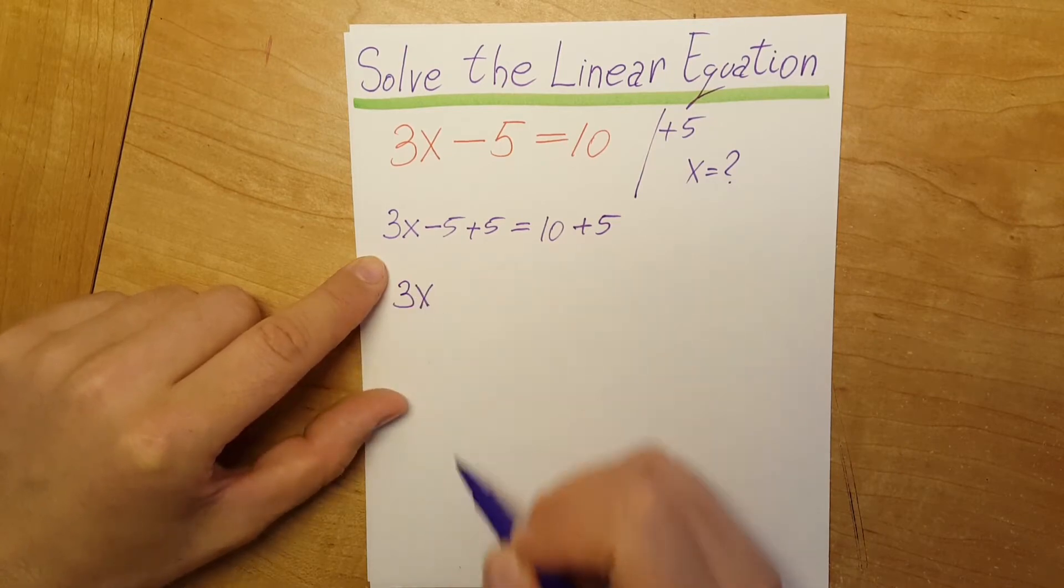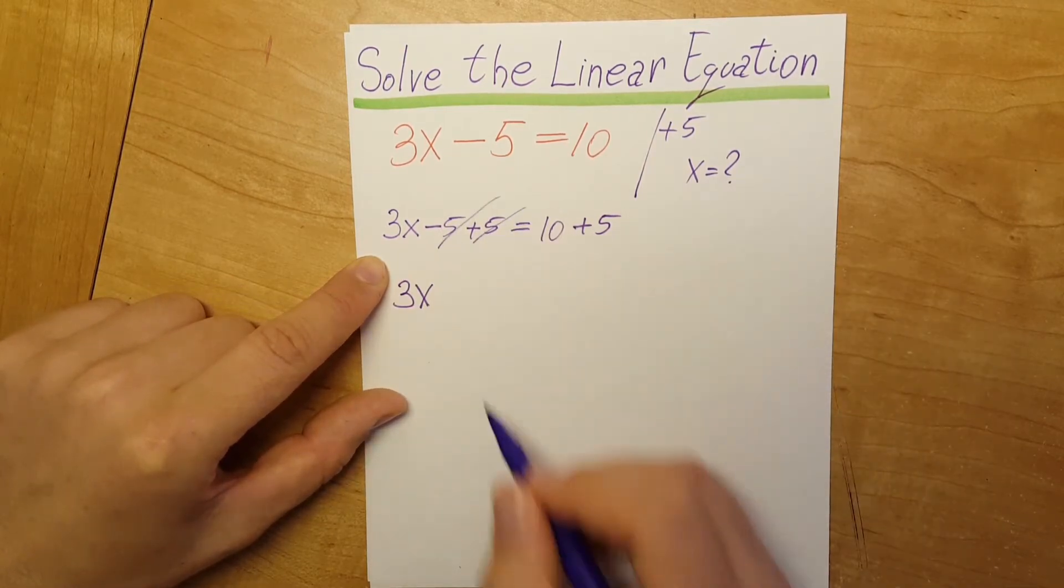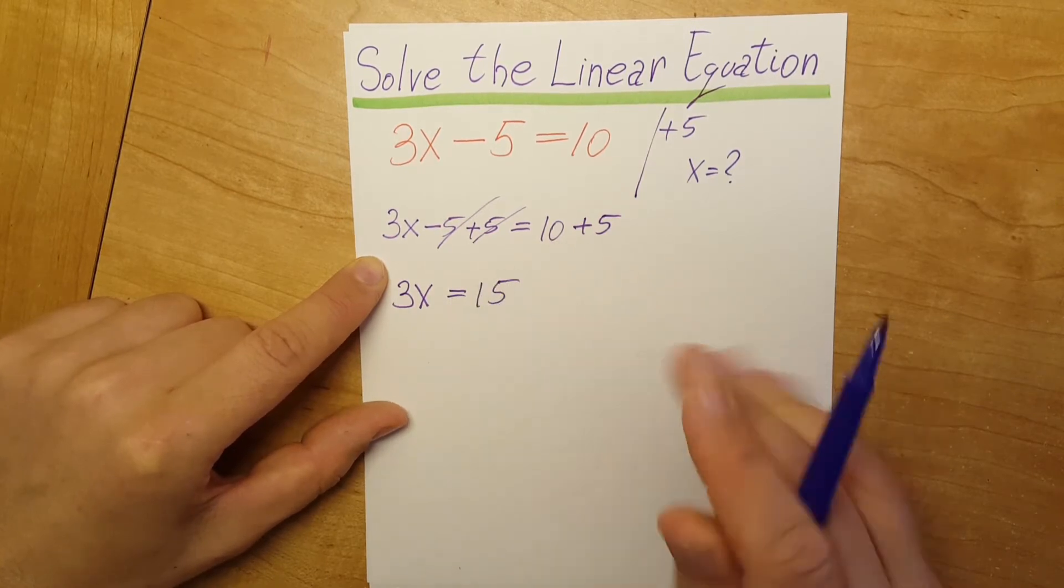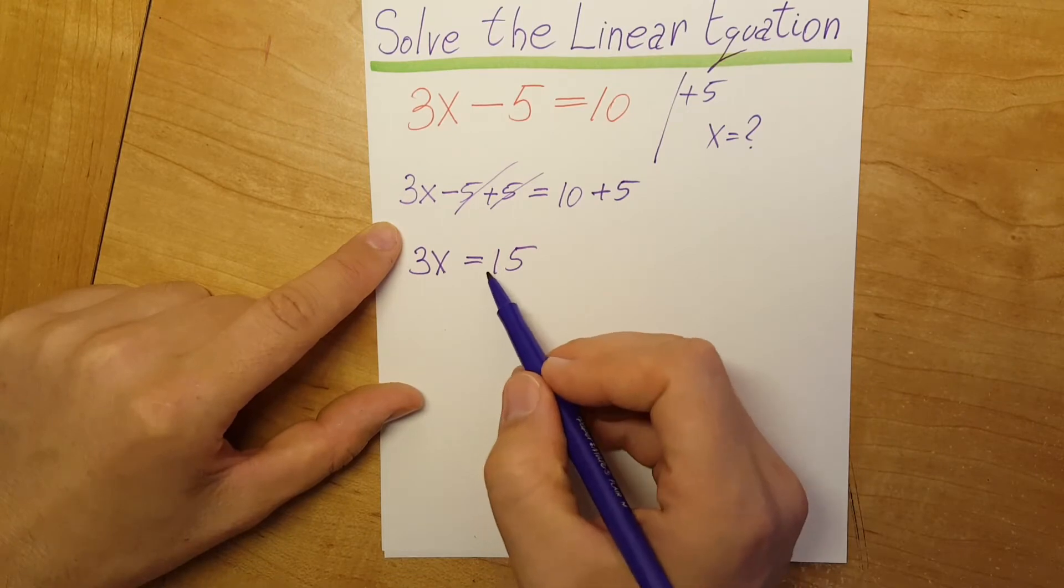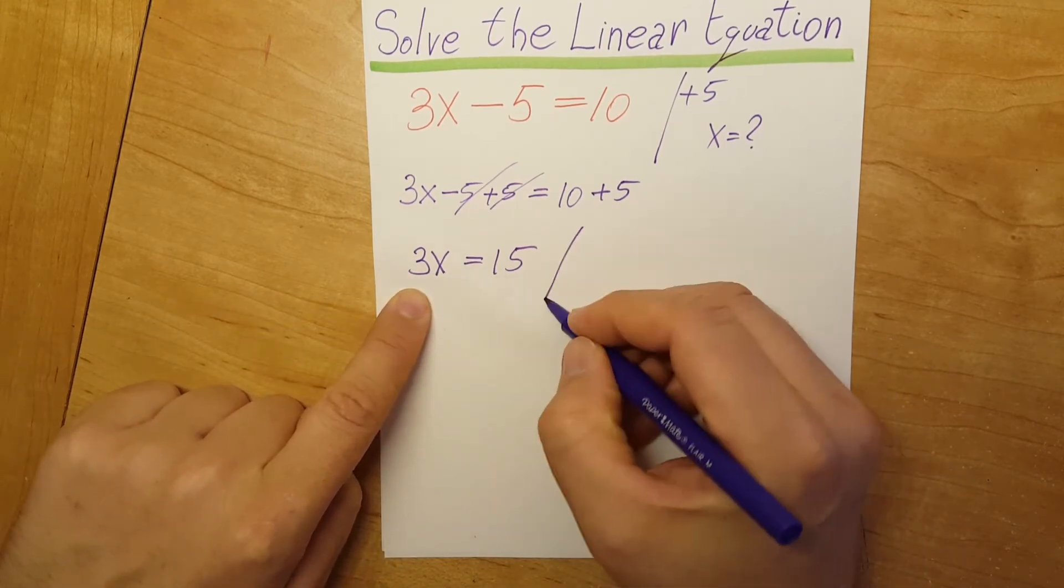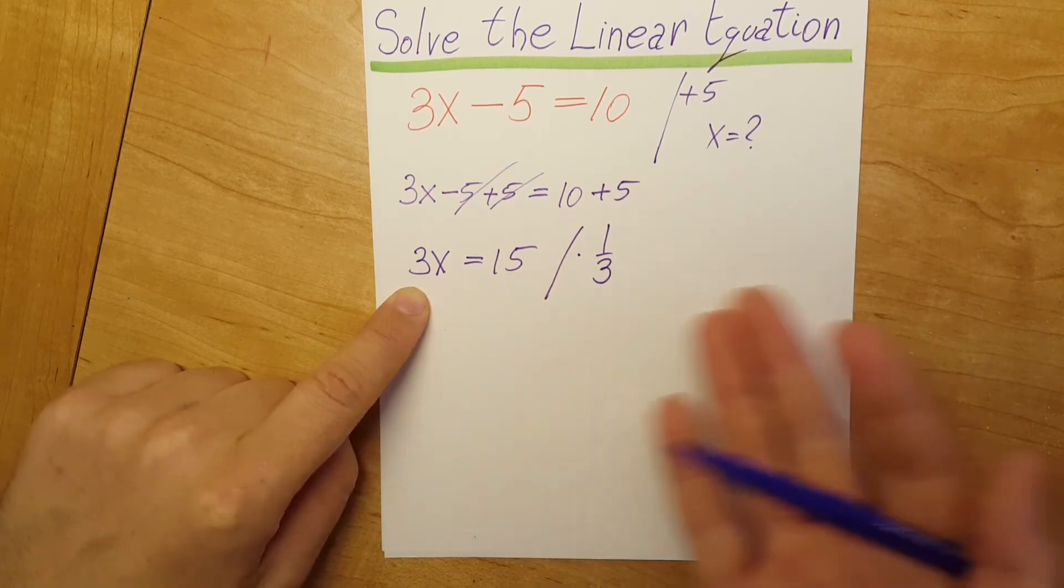3x stays unchanged, minus 5 plus 5 cancel each other out, equals 10 plus 5 is 15. Now we want the x by itself, so we're going to multiply by 1/3, or you could say divide both sides by 3.